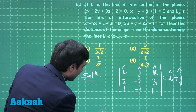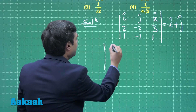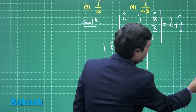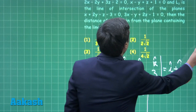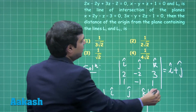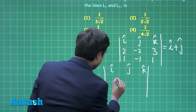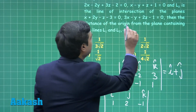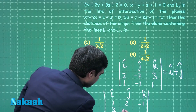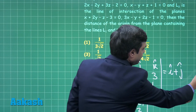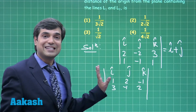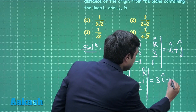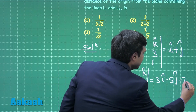Finding the direction ratios for the second line L2, we write i, j, k and use the normals of the other two planes: (1, 2, -1) and (3, -1, 2). Simplifying this cross product, we get the direction ratios 3i - 5j - 7k.